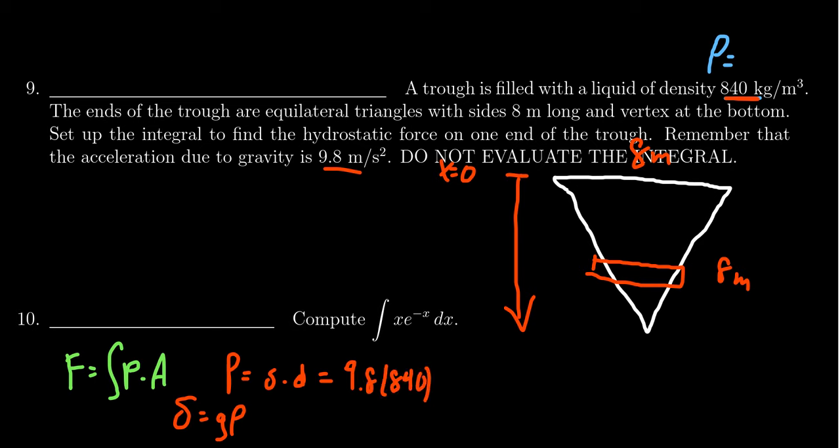And so getting back to pressure here, you're going to have 9.8 times 840 times the depth. Well, if you set x equals 0 to be the top of the water and you point x downward, then depth will just equal x, which is really nice. And so this gives us our pressure right here: 9.8 times 840 times x, which if you want to multiply those things together, you can. I don't need you to. If you leave it factored, it's perfectly fine. This gives us the pressure.